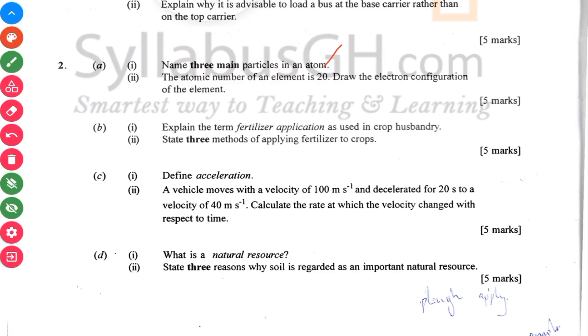Then 2A(II) has to do with atomic number of 20 — draw the electron configuration. And 2A is a power topic I always mention: naming of compounds and so on.